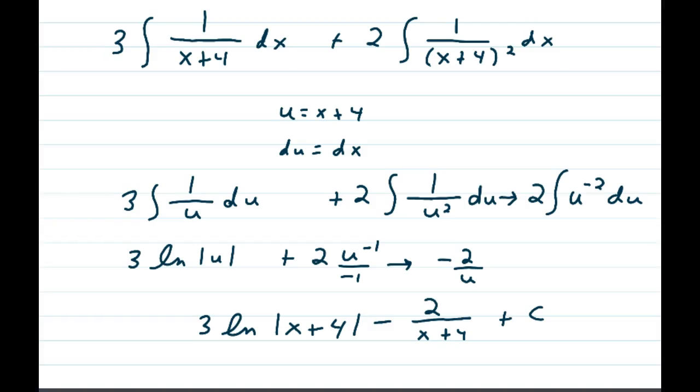And again, 1 over u du is certainly the natural log, so I have 3 natural logs of u. Use the power rule on the second integral to get 2 u to the negative 1 over negative 1, which when we simplify that a little bit, we get negative 2 over u.